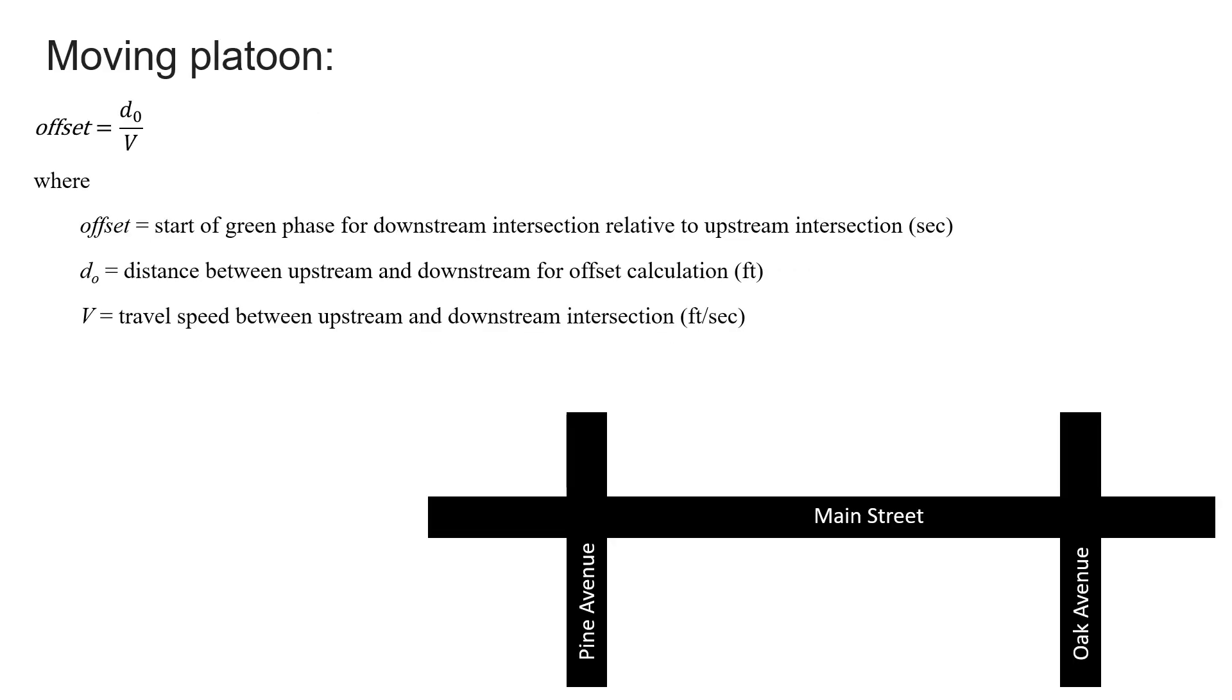So starting with our moving platoon, the offset is equal to the distance between those upstream and downstream signals divided by the travel speed between the upstream and downstream intersection. Our offset is equal to 800 feet divided by 45 miles per hour. To convert that to feet per second, we multiply by 1.467, and that's going to give us an offset of 12.12 seconds.